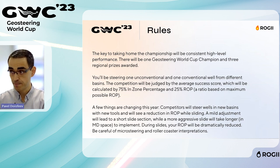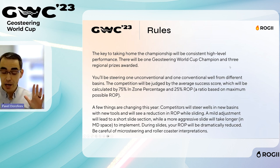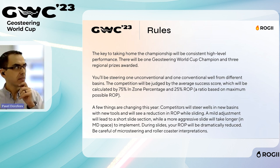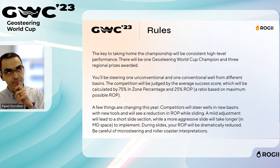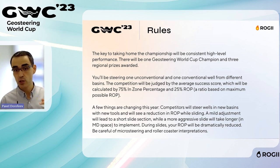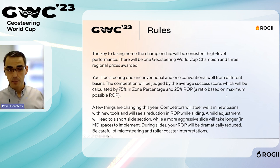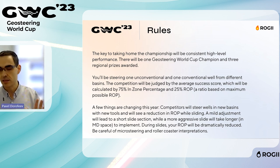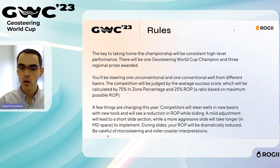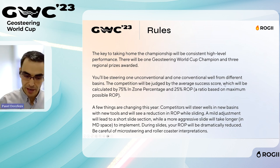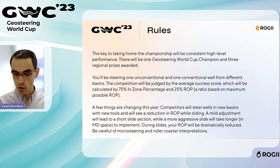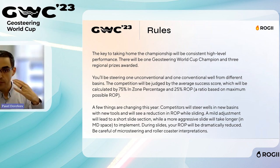Take into account both zone percentage and ROP. If your ROP is very low, your score will be lower even with a high zone percentage. Everything will be calculated live, so you'll see your results during or after the first round. You will have two rounds. ROP is the rate of penetration — essentially how fast you drill on the MD scale. The faster you drill and the more you stay in the target zone, the better.